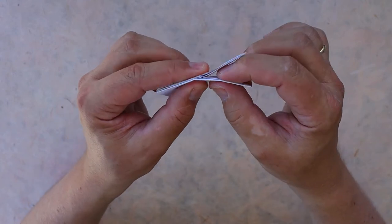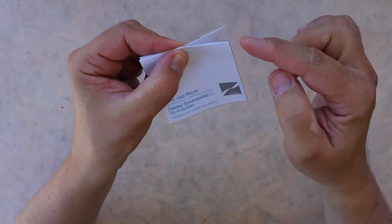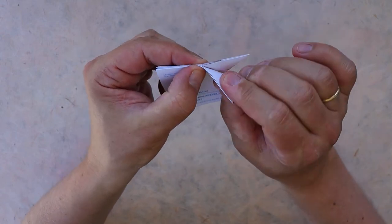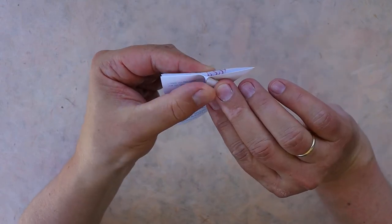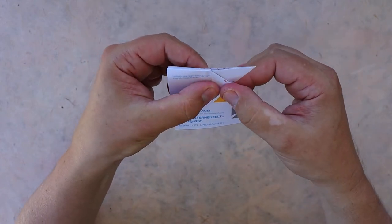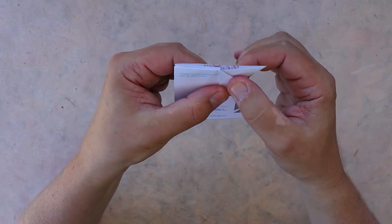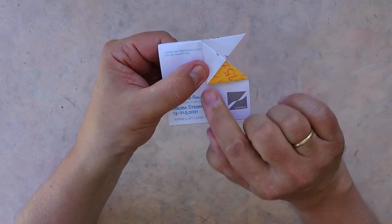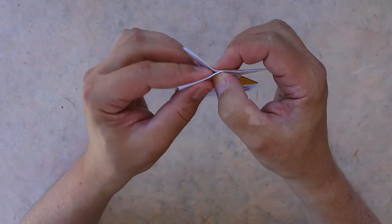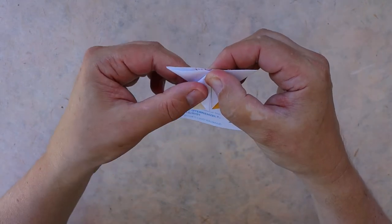So then you fold this upper corner down to the middle of the paper, the center, like so. And repeat on this side.